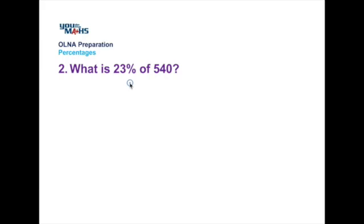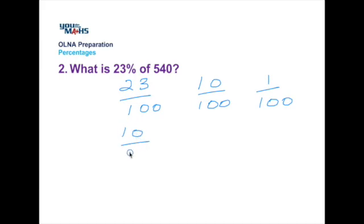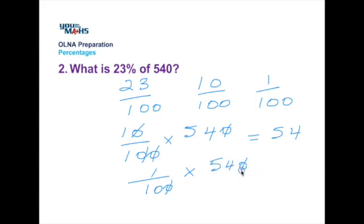When working without a calculator it's helpful to split up the percentage. So 23% is 23 over 100. But we can consider that as parts: 10 over 100 and 1 over 100 can be used to build up to 23 over 100. So what is 10% or 10 over 100 of 540? Doing a calculation like this means we can divide by 10 on the first fraction, divide through again on the top and bottom line, and we're left with 54. So 10% of 540 is 54. What about 1%? We can do the same division. We can divide by 10. And dividing by 10 again gives us 5.4. So that's 1% of 540.